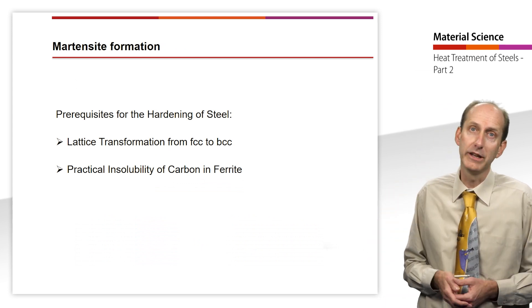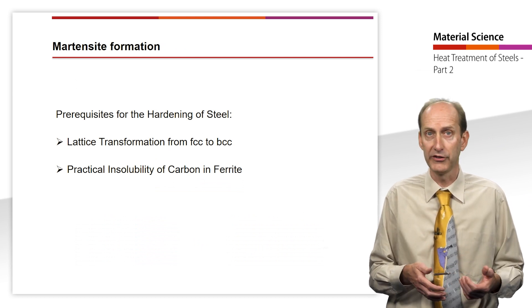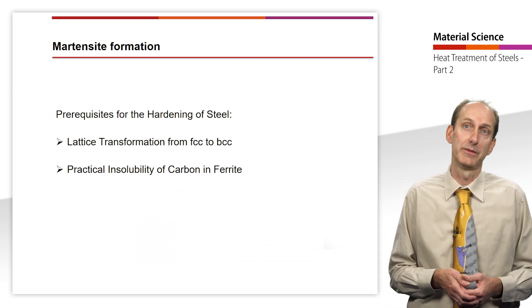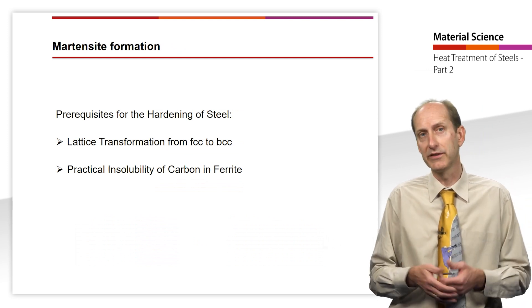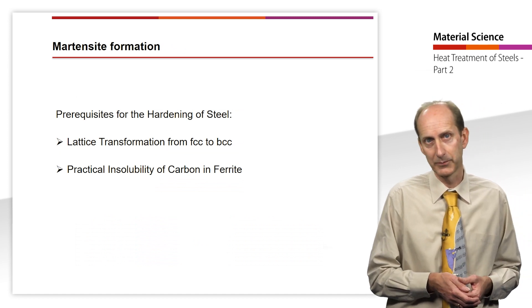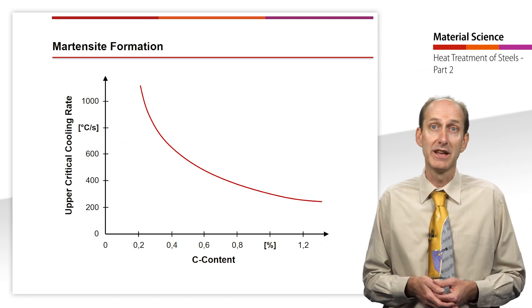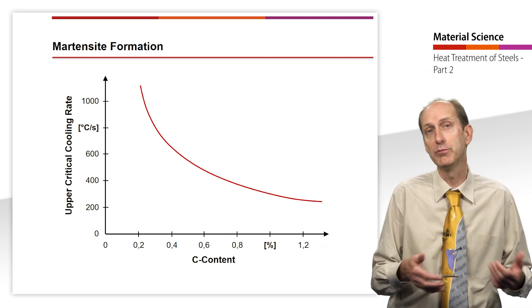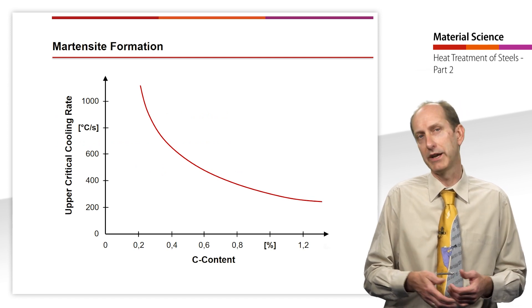However, a new holding point called the martensite start temperature occurs before this happens. Here, the transformation of austenite to martensite begins. Then, the lower critical cooling rate is exceeded. During hardening, a martensite microstructure as pure as possible should be formed, thus completely suppressing pearlite formation.